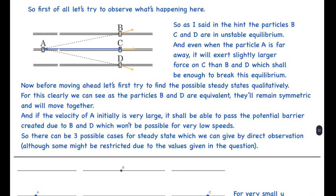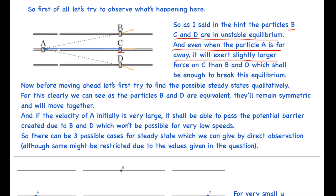Let's observe what is happening. Particles B, C, and D are in unstable equilibrium, and even when particle A is far away it will exert a slightly larger force on particle C, since the distance is slightly smaller, which is enough to break this equilibrium. Particle C will move forward, and due to the repulsion between B–C and C–D respectively, particles B and D will move in the backward directions.